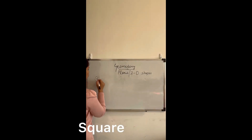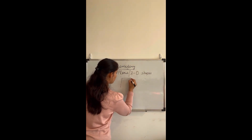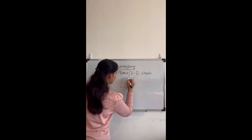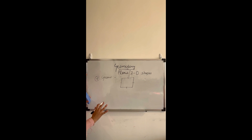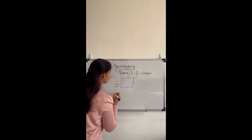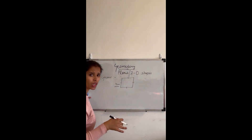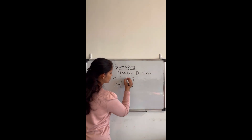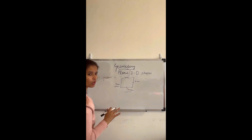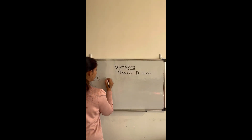Next is the square. A square is the shape where all sides are equal. If one side of a square is four centimeters, then all other sides will also be four centimeters — that is the key property of a square.